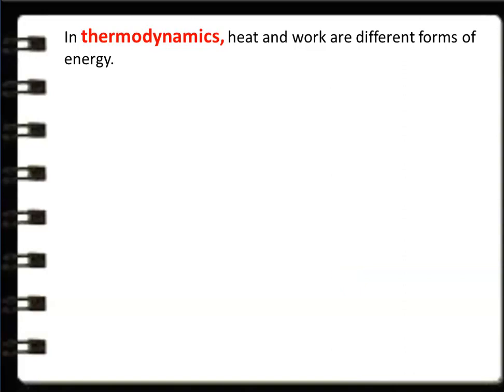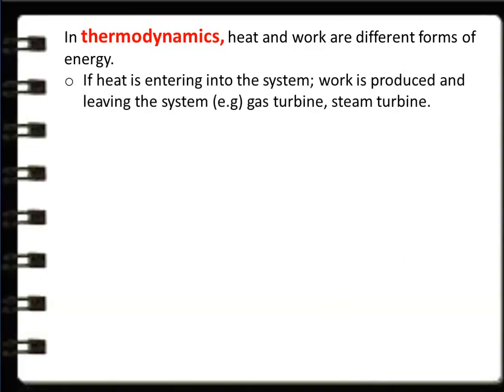In thermodynamics, from earlier discussion, we know that heat and work are two important and different forms of energy. We always deal with heat and work. When heat enters a system, work is produced and leaves the system — for example, in a gas turbine or steam turbine, hot gases or steam are supplied and mechanical work is produced.